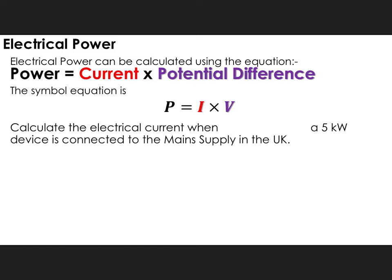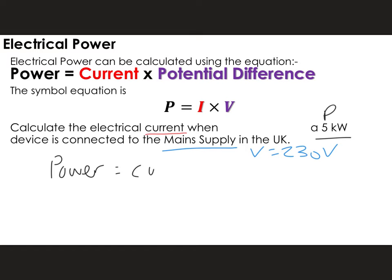Now let's look at an example where we have to rearrange the equation. It says calculate the electrical current when a 5 kilowatt device is connected to the main supply in the UK. This time we've been asked to calculate the current. We've got a 5 kilowatt supply which is our power, and we know the potential difference is equal to 230 volts. So we write out the equation: power equals current times potential difference.